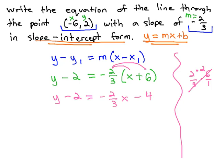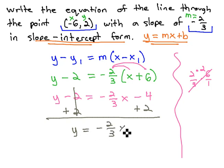Now we can finally get the y alone by adding 2 to both sides. We are now in slope-intercept form: y equals negative 2/3 x minus 2.